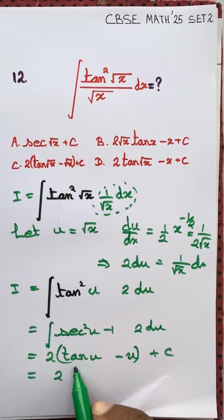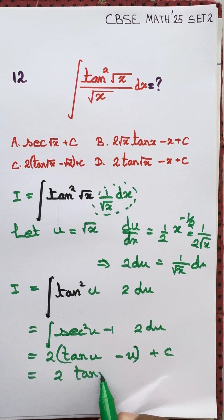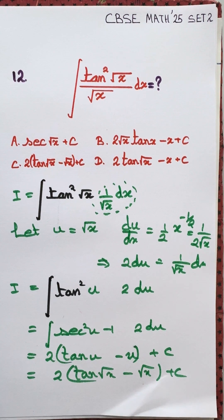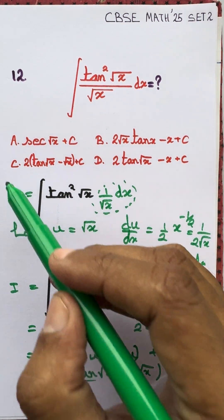We can write this as two tan root x minus root x plus some constant of integration. So the correct option is option C.